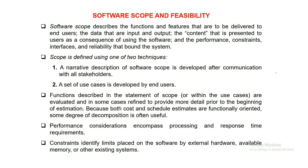The first part of software project planning is identifying the scope of a software and establishing the feasibility out of the requirement.